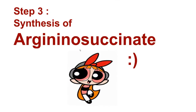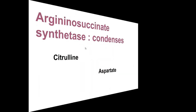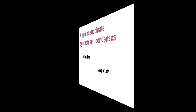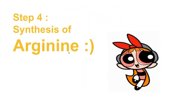Step 3 is the synthesis of arginosuccinate. The enzyme arginosuccinate synthetase condenses citrulline with aspartate to produce arginosuccinate. This step requires ATP.